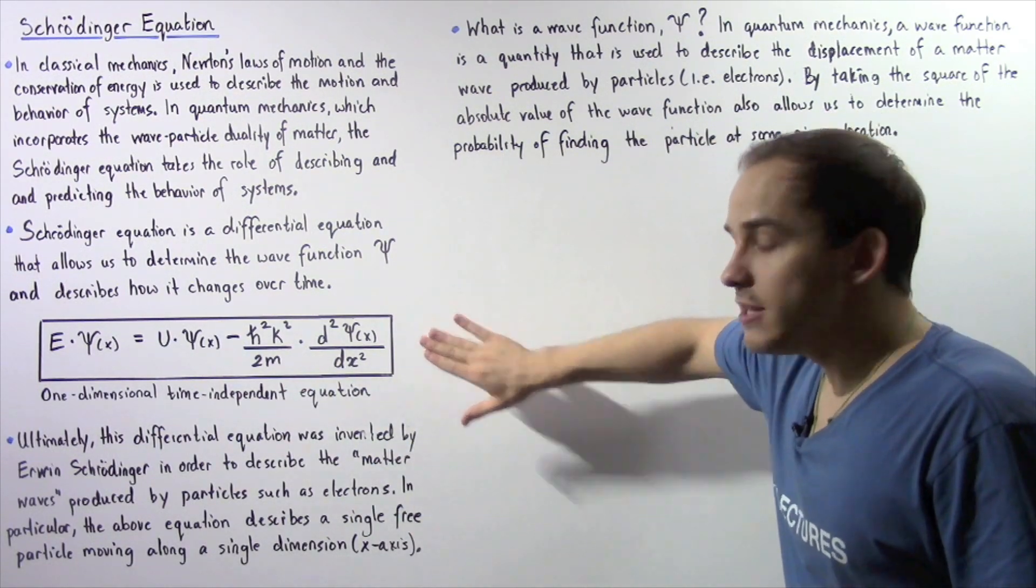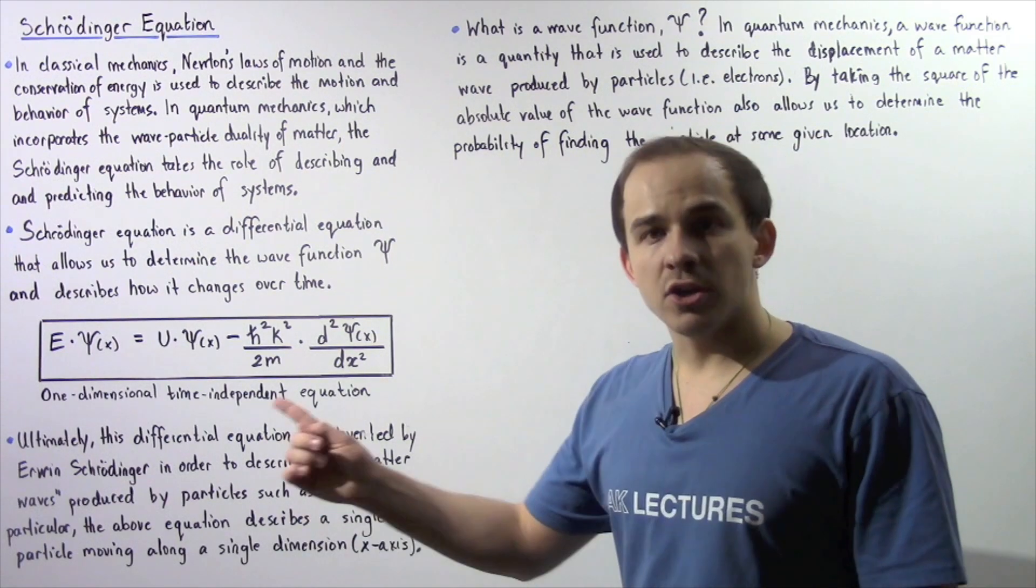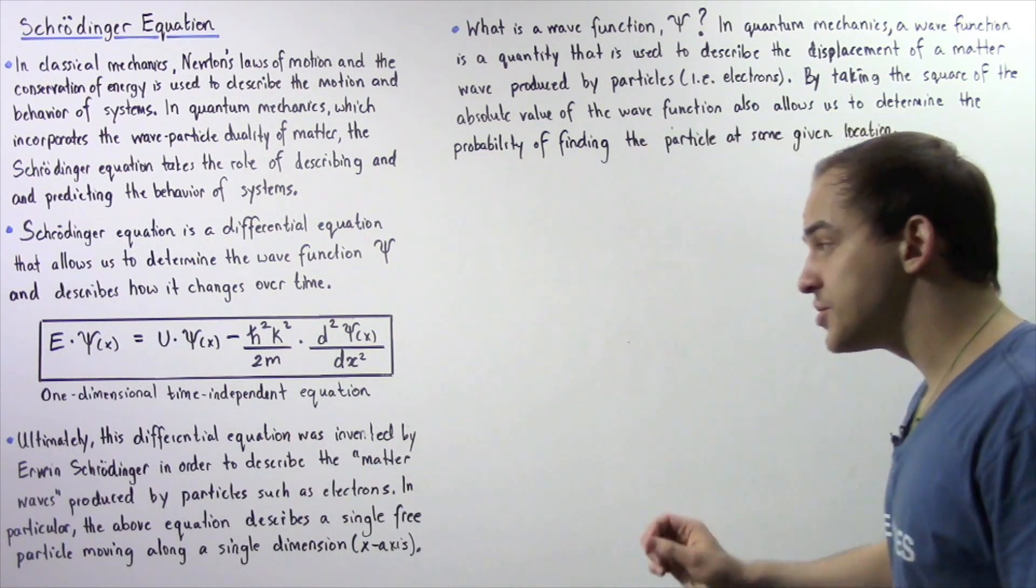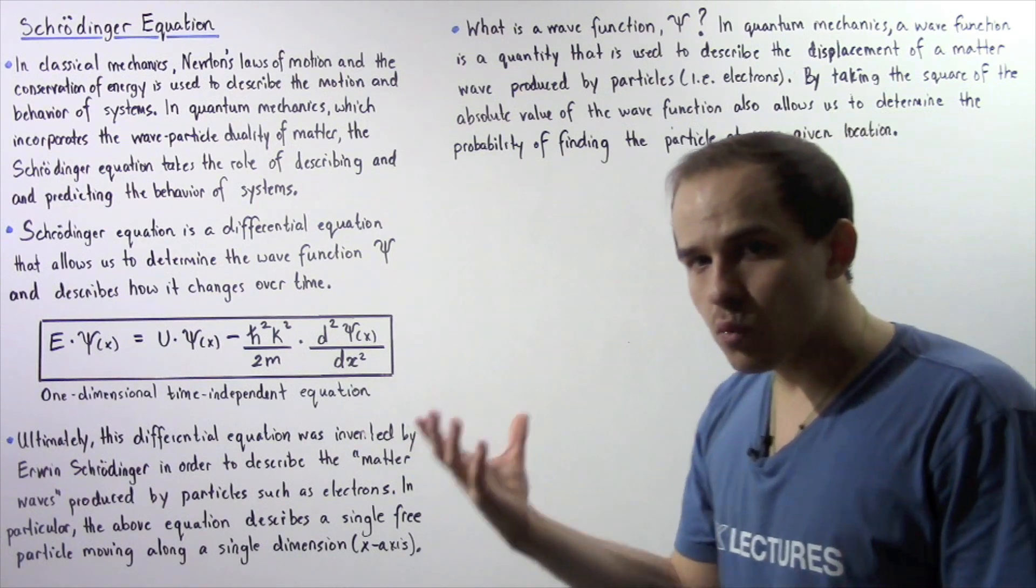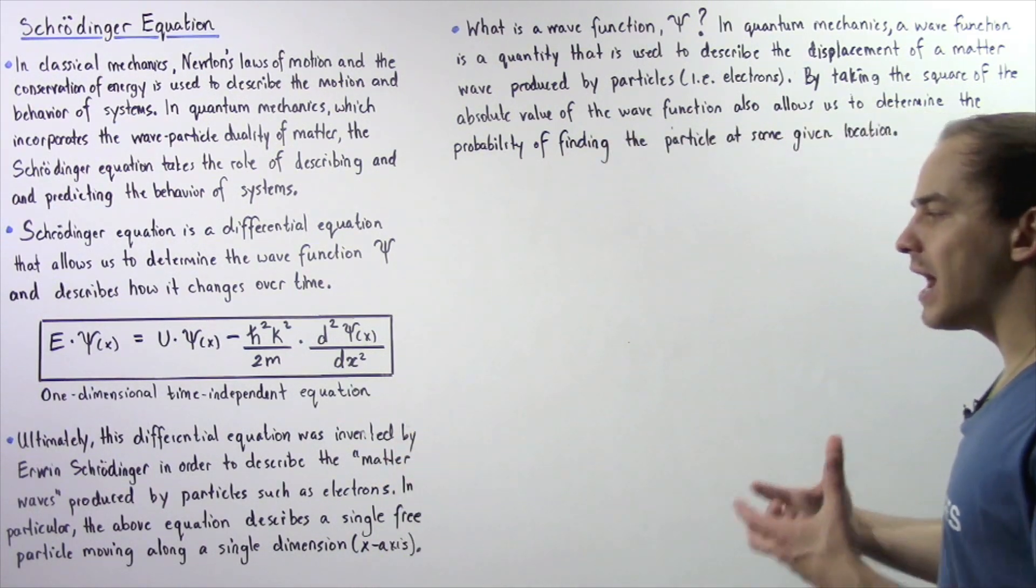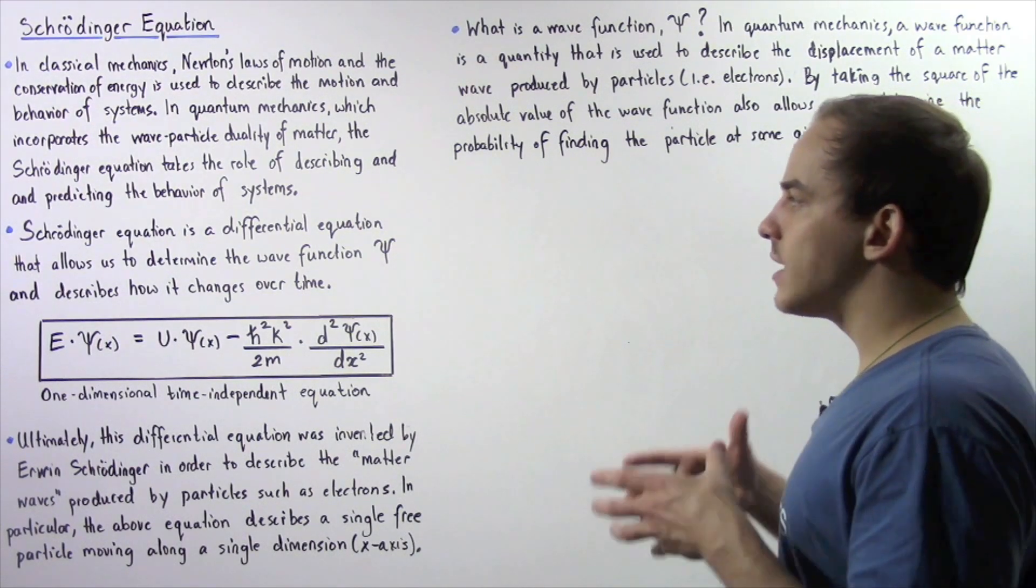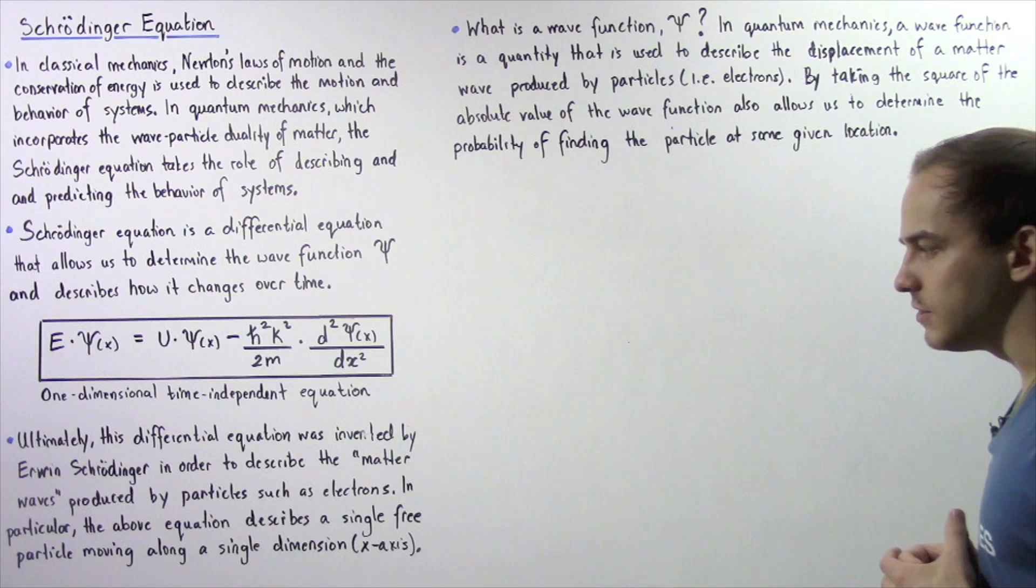Now basically, this differential equation was invented by Erwin Schrödinger in order to describe the matter wave that is produced by our electron, by our objects, which are found on the subatomic and atomic levels.